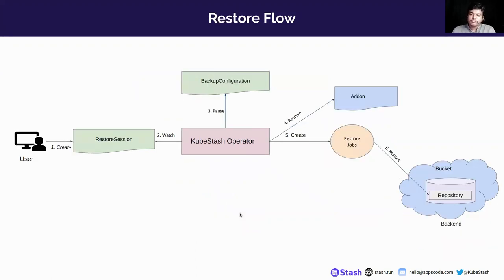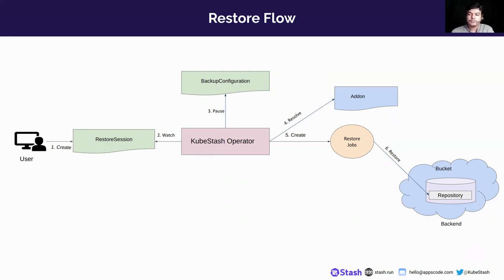Now let's see the restore flow for workload in KubeStash. The user will create a restore session. The operator will watch the restore session and pause the backup configuration. Note that in Stash, the user had to pause the backup configuration manually, but in KubeStash the operator is responsible for pausing it. Then the operator will resolve the addon and create restore jobs. The number of restore jobs also depends on the target workload to be restored. The restore data will be retrieved from the backend repository.